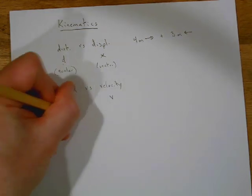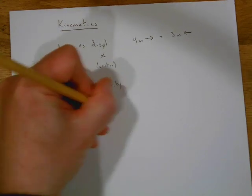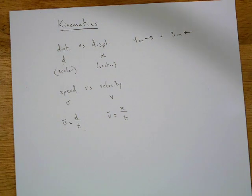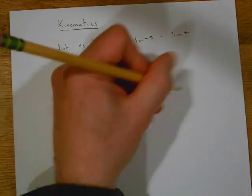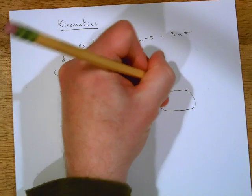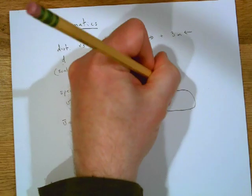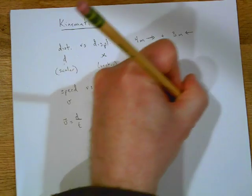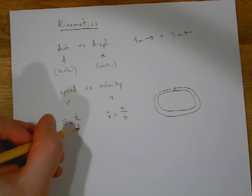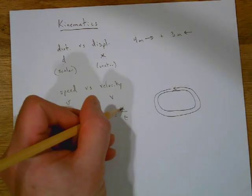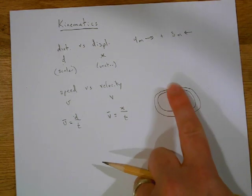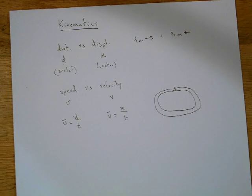Average speed is just distance over time, where average velocity is displacement over time. They're both measured in meters per second. For example, if you run around a 400-meter track one time all the way around, the distance you travel would be 400 meters divided by the time, but your displacement would be zero — because you ended up back at your starting point. Displacement is how far you end up from your starting point and the direction.